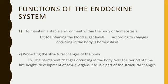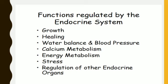Functions of the endocrine system include: to maintain a stable environment within the body, or homeostasis — for example, maintaining blood sugar levels according to changes occurring in the body. Also, promoting the structural changes of the body — for example, the permanent changes occurring over time like the development of sexual organs. General functions regulated by the endocrine system include growth, healing, water balance and blood pressure, calcium metabolism, energy metabolism, and stress regulation of other endocrine organs.